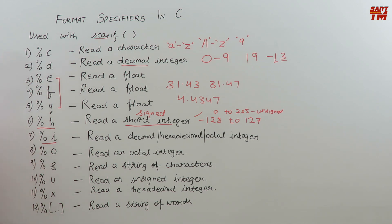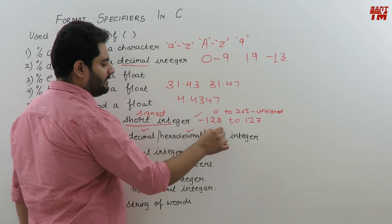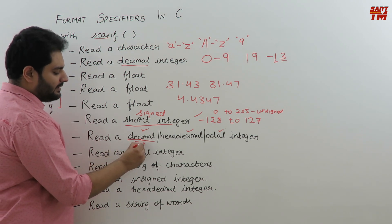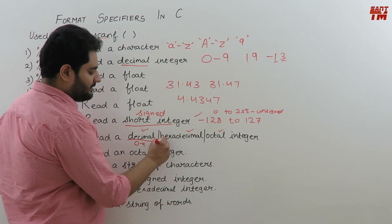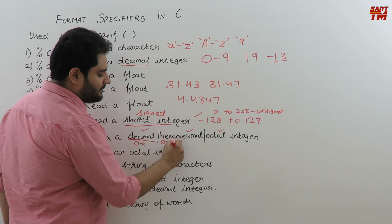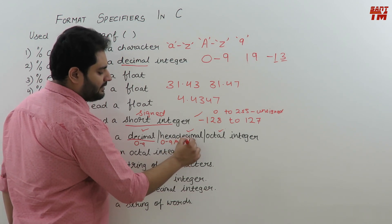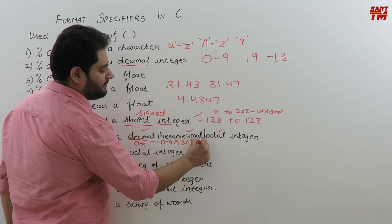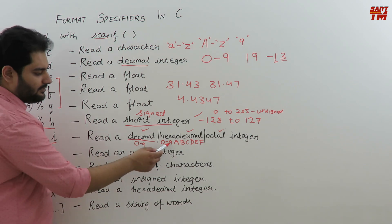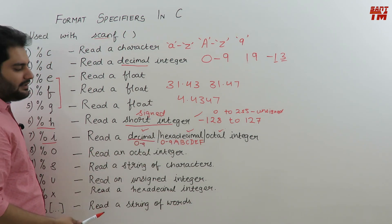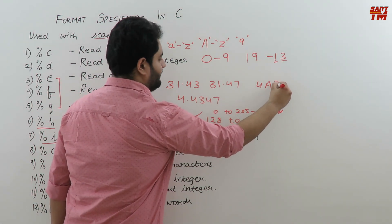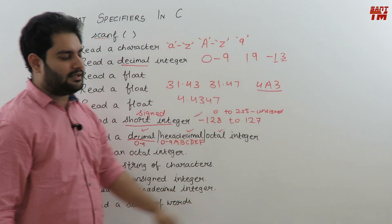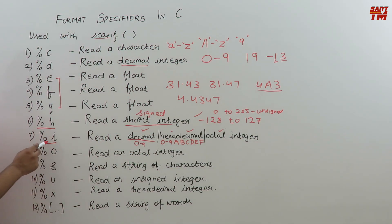%i is used to read a decimal, hexadecimal, or octal integer. A decimal number uses digits 0 to 9. A hexadecimal number uses digits 0-9 and letters a-f, where 10=a, 11=b, 12=c, 13=d, 14=e, 15=f. For example, 4A3 is a hexadecimal number where 4 is a digit, A means 10, and 3 is 3 — so 4A3 is a hexadecimal integer readable using %i.